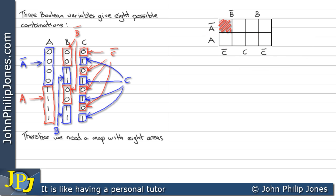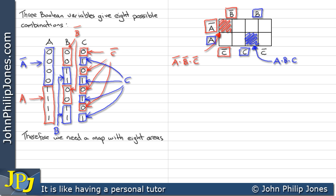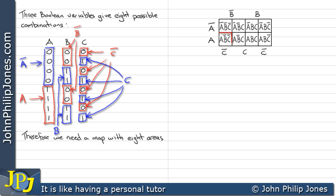This square is in the not A, not B and not C area, so it is known as not A and not B and not C. This square is in the A, the B and the C, consequently known as A and B and C. This square is represented by A, not B and not C all ANDed together. This particular square is not A, B and not C all ANDed together.